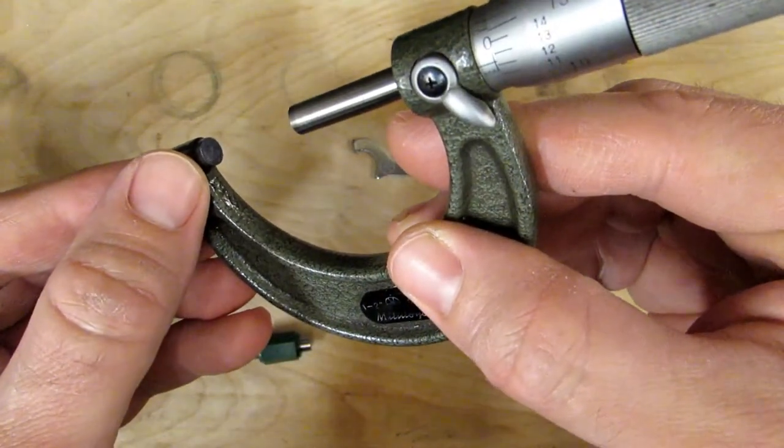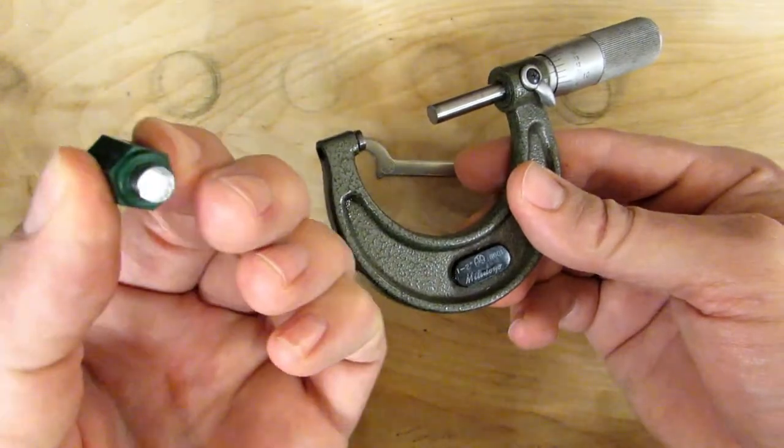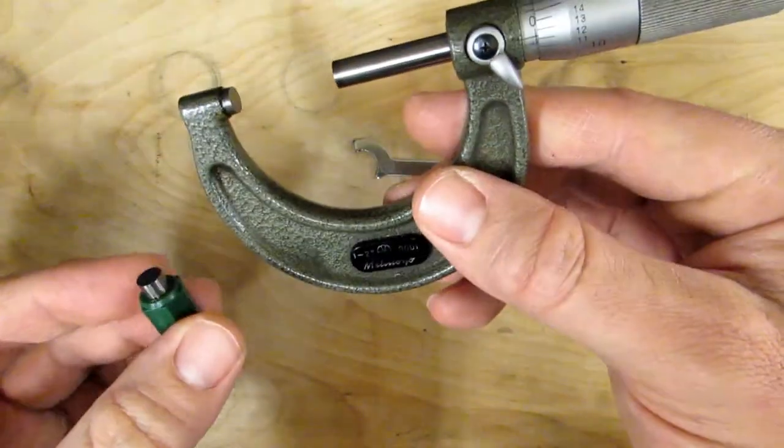What you're going to use is a lint free cloth to clean your anvil faces, both of them, as well as your micrometer standard. This is a 1 inch standard because I have a 1 to 2 inch mic.